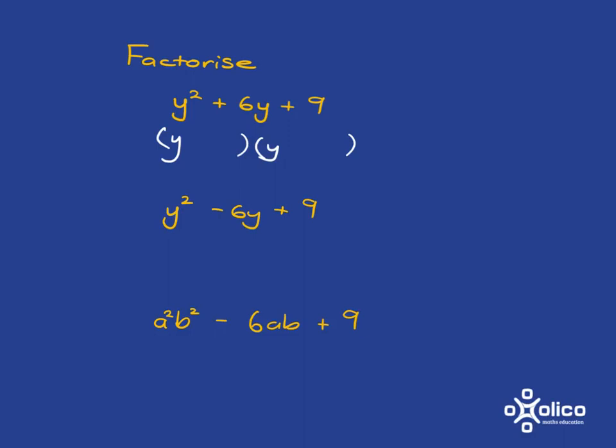So let's look at the factors of 9. It's 1 and 9 and then there's also 3 with 3. Which of those add up to give you 6? Well, obviously it's the 3 and 3, so you get plus 3 plus 3. And we can write that nicely as y plus 3 squared.